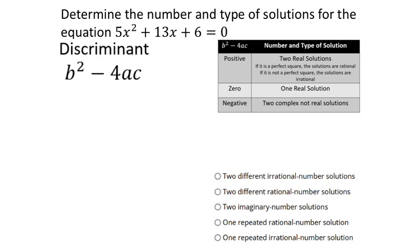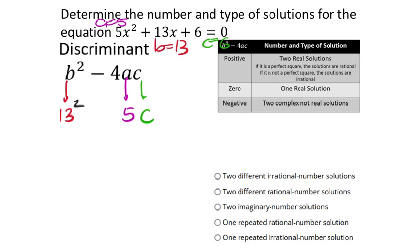We're going to find the discriminant. The b value is 13, the a value is 5, and the c value is 6. So it's 13 squared minus 4 times 5 times 6. Putting this in the calculator: I get 49.